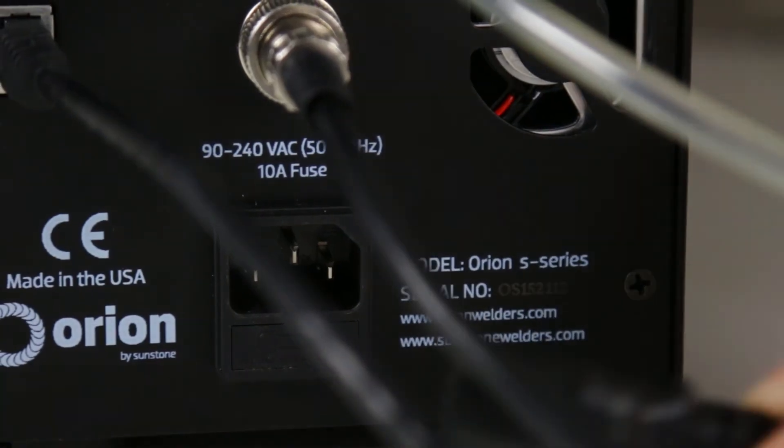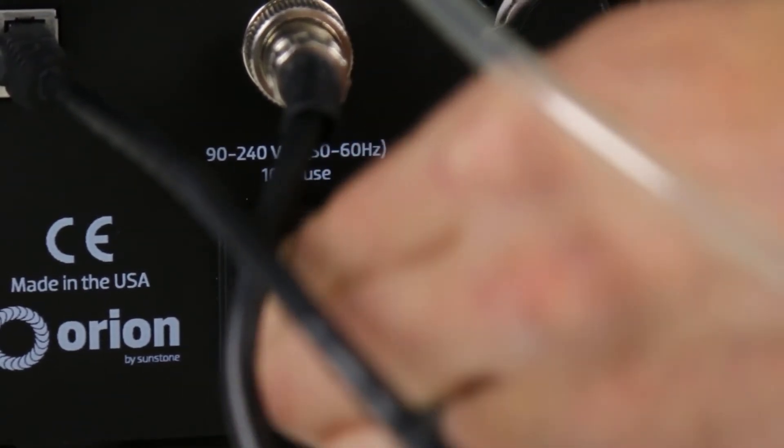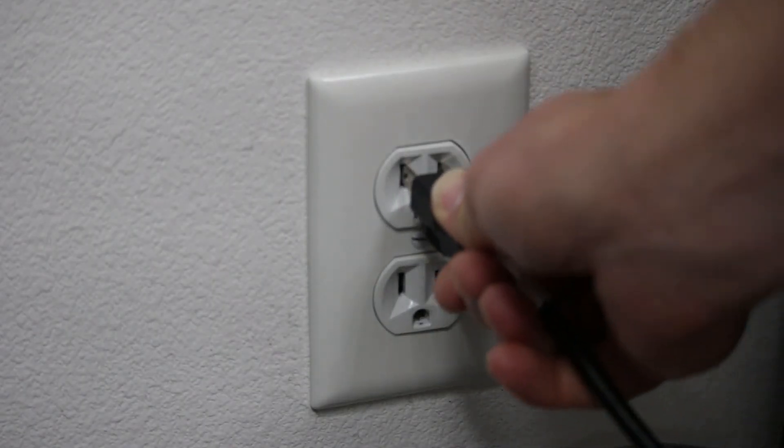Plug the AC power cable into the back of the welder and then plug the other end into any standard 110-220 VAC outlet.